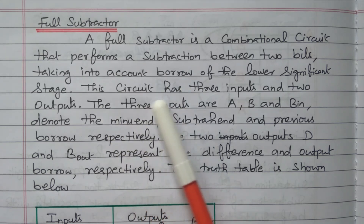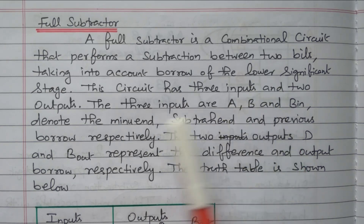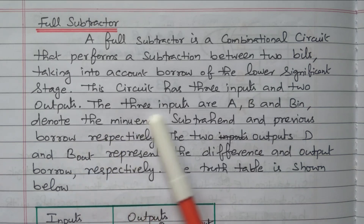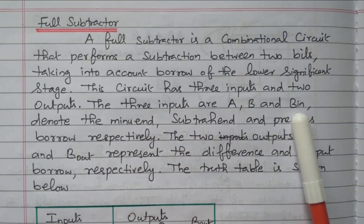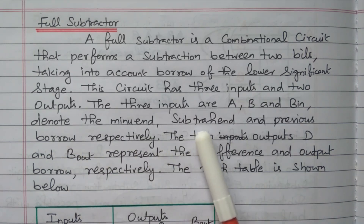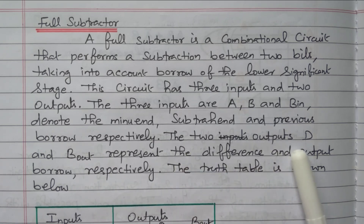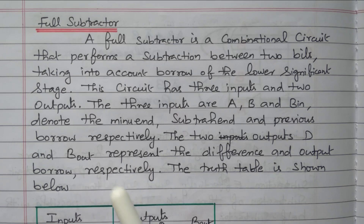Based on that, this circuit has three inputs and two outputs. The three inputs are A, B, and Borrow-In (B_in), denoting the minuend, subtrahend, and previous borrow respectively. The two outputs are D (difference) and Borrow-Out, representing the difference and output borrow respectively.